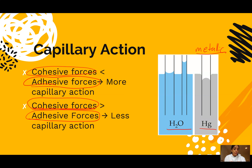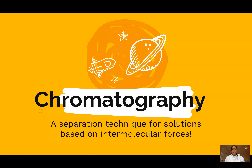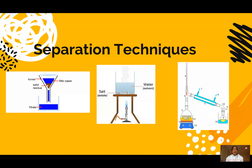The strong intermolecular forces of mercury are also why mercury has that convex meniscus, which is pretty cool. The last piece we need to talk about is chromatography — a separation technique used for things in the liquid phase, mostly solutions that are mixtures we want to separate. Chromatography is really based on intermolecular forces, so let's do a quick refresher on separation techniques before we dive deeper into chromatography tomorrow.